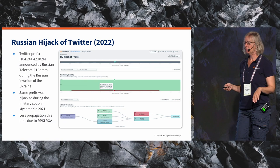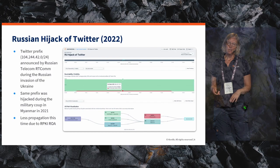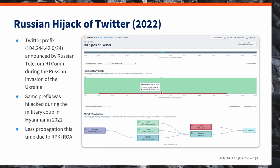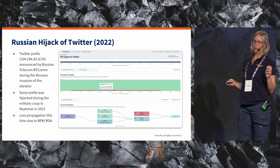A more recent example is Twitter in 2022, when we had the invasion of Ukraine. Again, the purpose was inside a specific region or country — they wanted to shut down a service, this time Twitter. And again, unfortunately, the de-aggregated prefixes were leaked. But this time, the impact was much smaller, and this was due to RPKI.